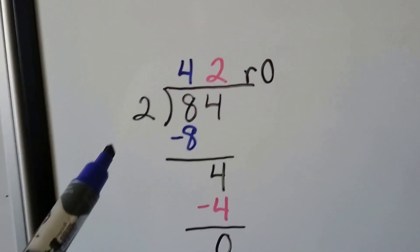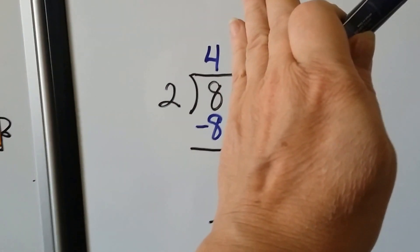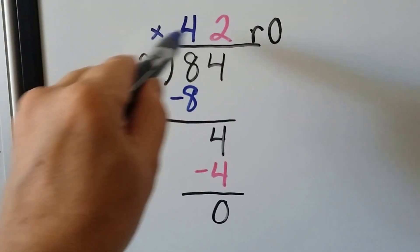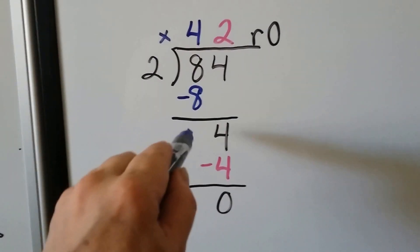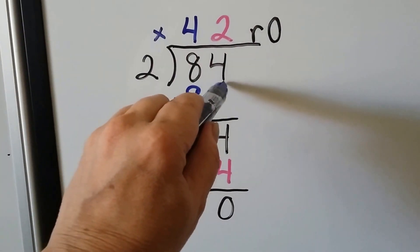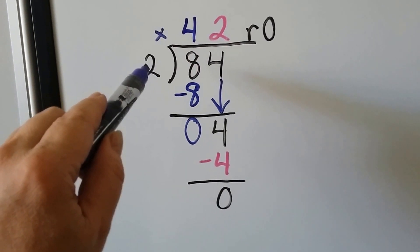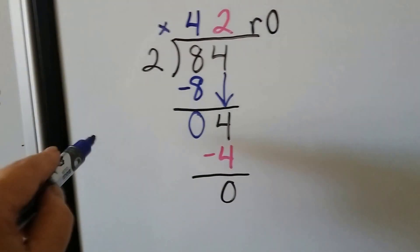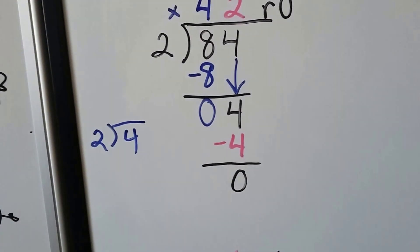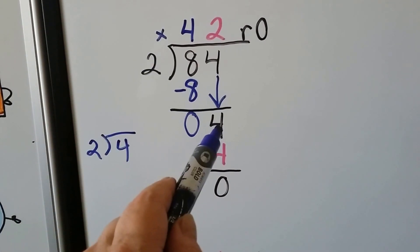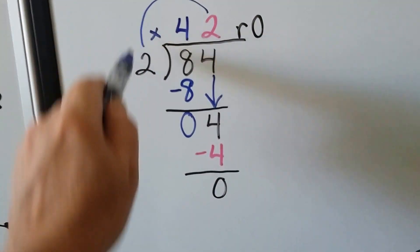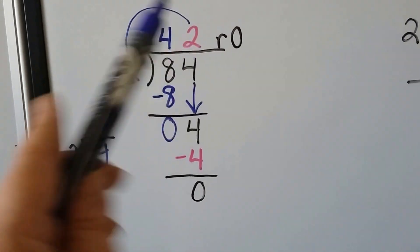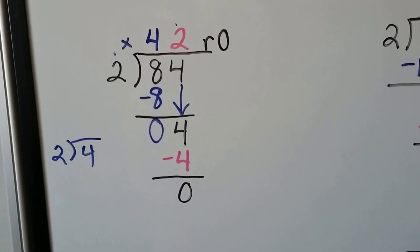Let's take this a step up. Now we have 84 divided by 2. We ask ourselves, how many times can 2 fit into the 8? 4 times. 2 times 4 is 8. We subtract it and get a 0. Now it's the 4's turn to drop down. How many times can 2 fit into this 4? It's almost as if we're doing 2 goes into 4 now. 2 goes into 4 two times. 2 times 2 is 4, and we subtract it and get a 0. So 2 goes into 84 forty-two times, with 0 left over.